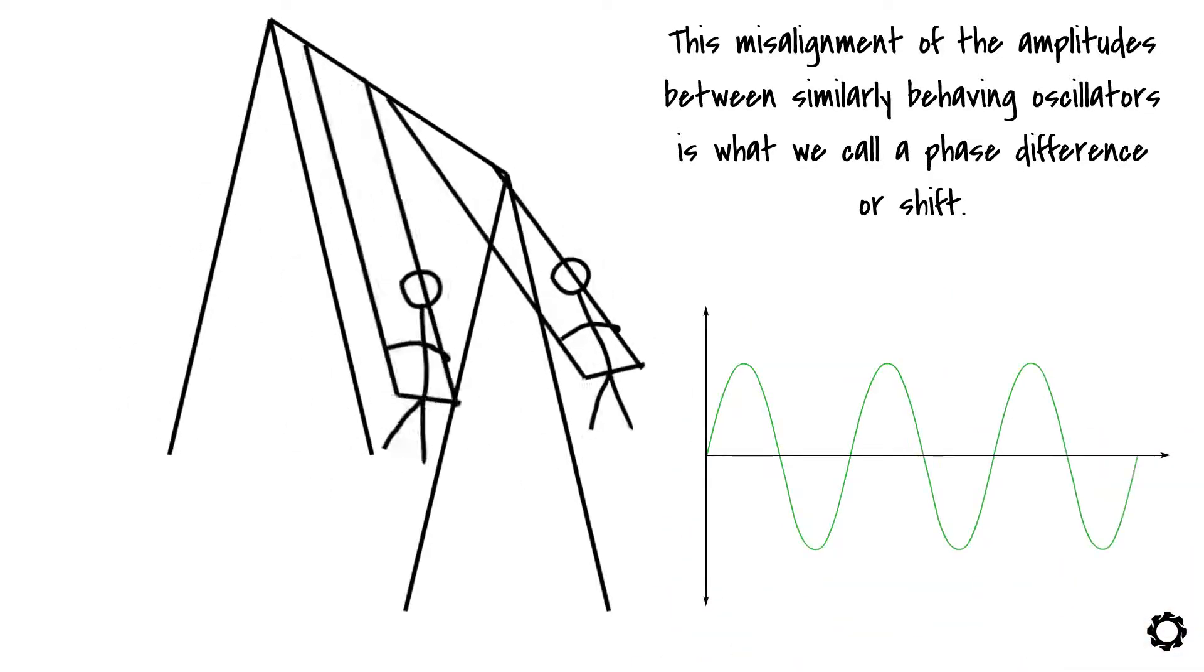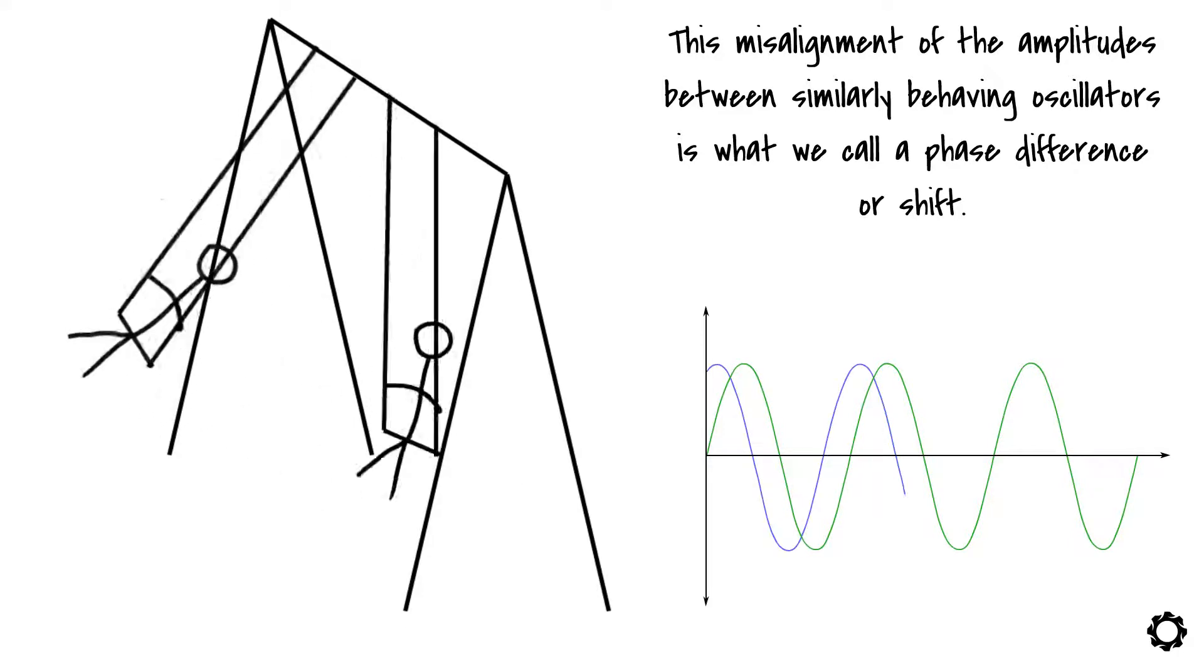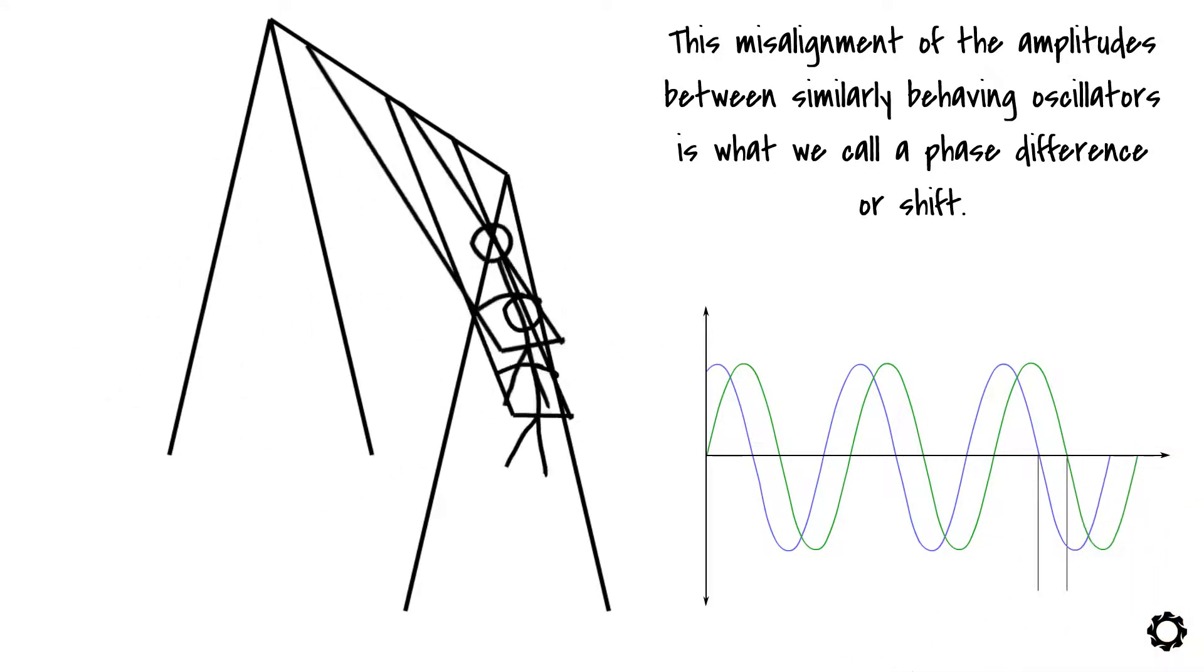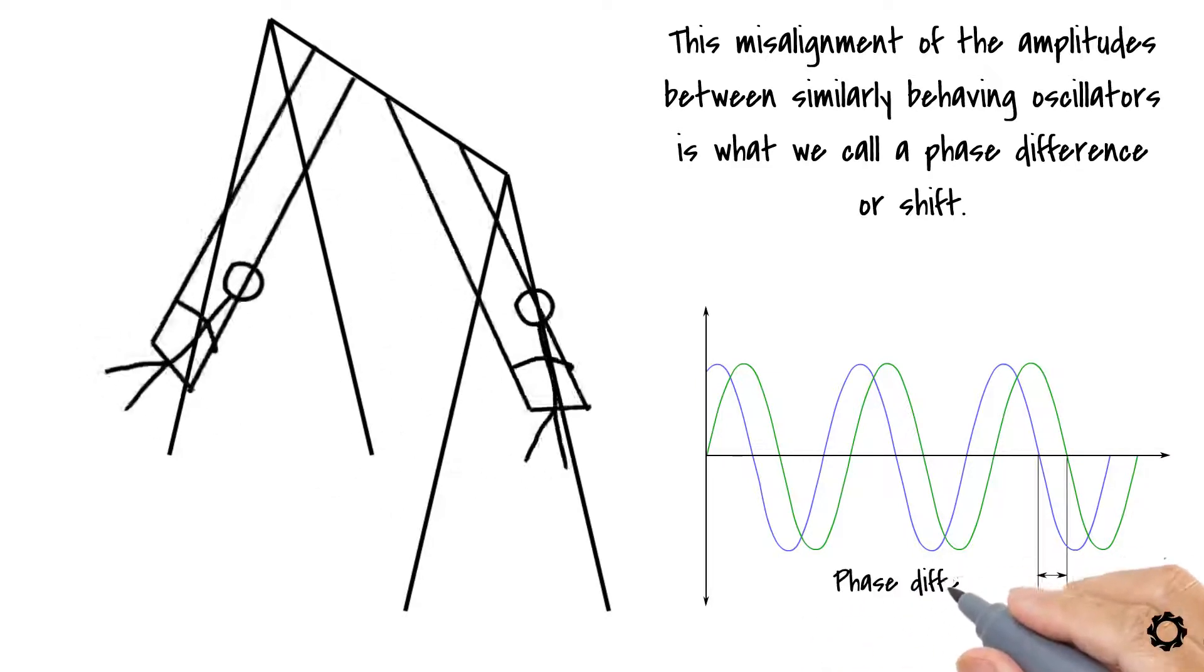If one wave, like the green one here, is shifted to the right relative to the other wave, the blue one, then we can say that the shifted green wave has a positive phase shift.